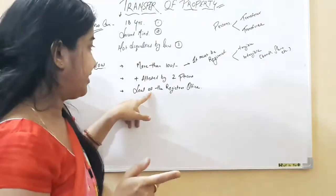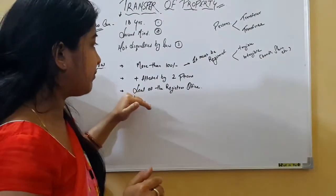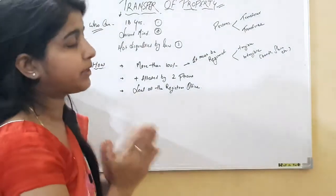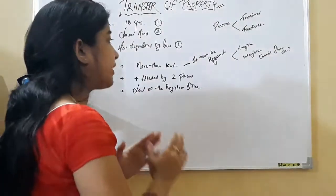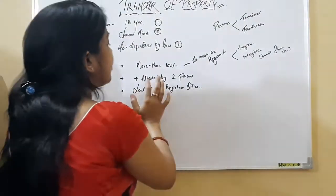Two witnesses must be there and the seal of the registrar office. Last and foremost to become a valid transfer, the property is transferred by that property must contain the two witnesses.